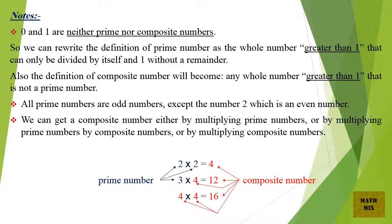Notes: 0 and 1 are neither prime nor composite numbers. So we can rewrite the definition of a prime number as: a whole number greater than 1 that can only be divided by itself and 1 without a remainder. The definition of composite number becomes: any whole number greater than 1 that is not a prime number. All prime numbers are odd numbers, except the number 2, which is an even number.